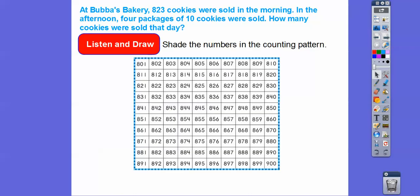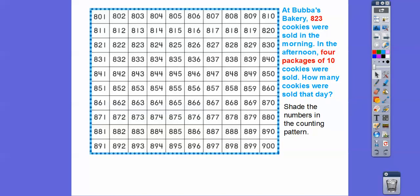So what they're going to ask us to do is shade the numbers in the counting pattern. I'm going to shrink this problem up and put it over here and put the question alongside so I can expand this number grid right here. It says 823 cookies were sold in the morning, so let's shade that number. There's 823 shaded right there.